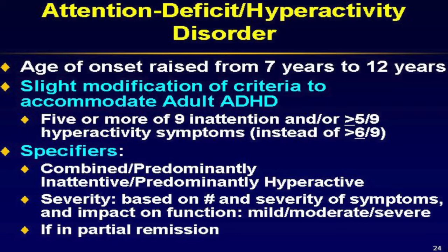To meet criteria, children need 6 of 9 symptoms of hyperactivity or 6 of 9 symptoms of inattention; for adults it's 5 of 9. Severity is based on number and severity of symptoms and impact on functioning. If you meet 6 or more of 9 in both domains, you receive the combined presentation specifier. If you meet full criteria for one domain but have more than 4 symptoms — 3 for adults — of the other, you receive a predominantly inattentive or predominantly hyperactive specifier.